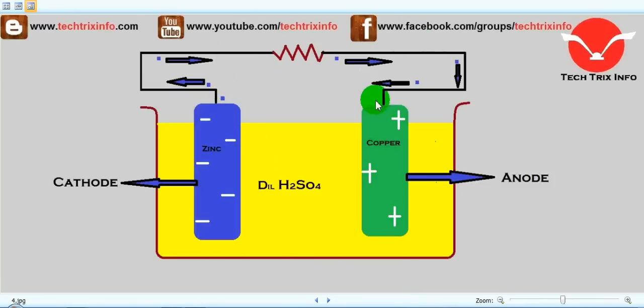We can see that the current flow is actually happening over here. That means the electrons from the zinc pass through this external connection towards the copper. This electron flow actually creates this current flow. That's how current flow is being generated in a voltage cell. This is like a cycle.